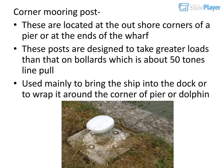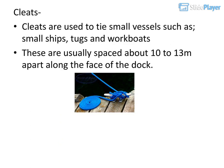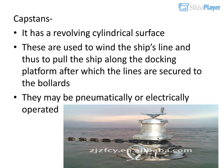Corner mooring posts: Located at the offshore corners of a pier or at the ends of a wharf. Designed to take greater loads than bollards, about 50 tonnes line pull. Used mainly to bring the ship into the dock or to wrap it around the corner of a pier or dolphin. Cleats: Used to tie small vessels such as small ships, tugs and work boats; spaced about 10 to 13 metres apart along the face of the dock. Capstans: Have a revolving cylindrical surface, used to wind the ship's line and pull the ship along the docking platform, after which lines are secured to bollards. May be pneumatically or electrically operated.